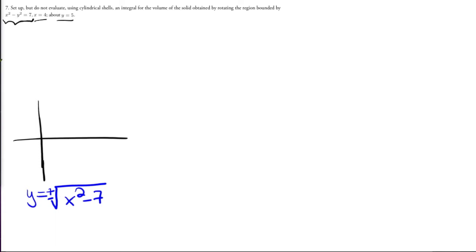Okay, so if you do that, you'll notice somewhere around here at square root of 7, you have a function that kind of looks like this, and then like that. Okay, and then we have x equals 4, which is just a vertical line.